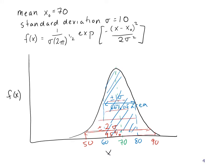So now if I look at all the area under the curve between 50 and 90, that's 95% of it.